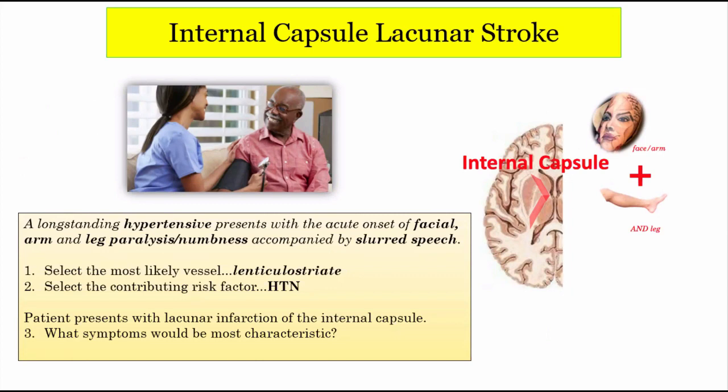Here's how the NBME may come after you. They might present a scenario where a patient experiences acute onset of facial, arm, and leg paralysis with slurred speech (dysarthria), then ask you to localize the stroke to a small lenticulostriate artery that supplies the internal capsule. Or they may give you the diagnosis as a lacunar stroke involving the internal capsule and ask what the patient's greatest contributing risk factor was. This is how they play the game for internal capsule lacunar strokes.